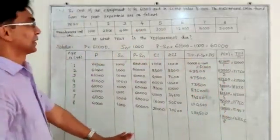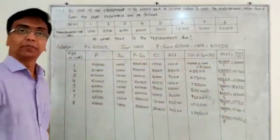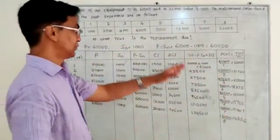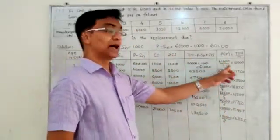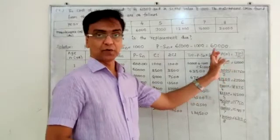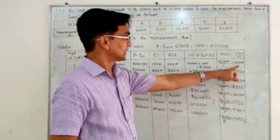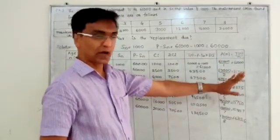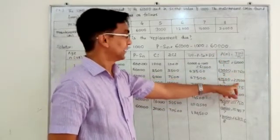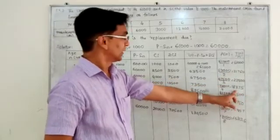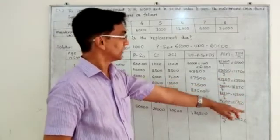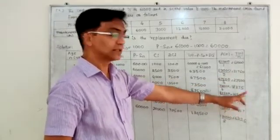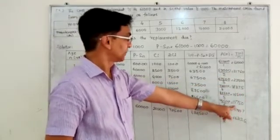Now please observe the annual average cost for each year: Year 1 is 61,000; Year 2 is 31,750; Year 3 is 22,500; Year 4 is 18,375; Year 5 is 16,500.